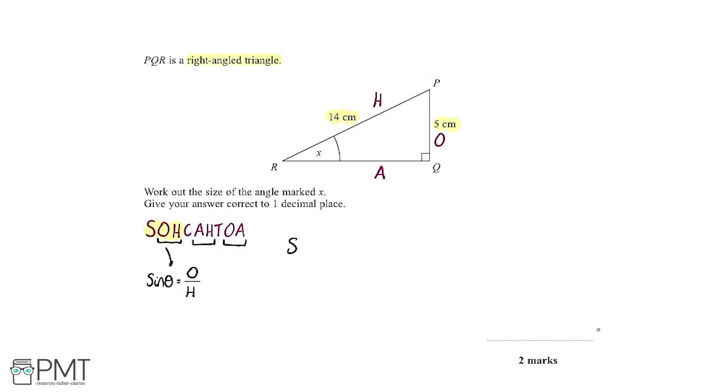So using this, we've got the sine and we're going to replace the theta with the angle we're working out. Well, the angle we're working out here is X. So we're going to have sine X, and that's opposite over hypotenuse. So opposite is 5cm and hypotenuse is 14.